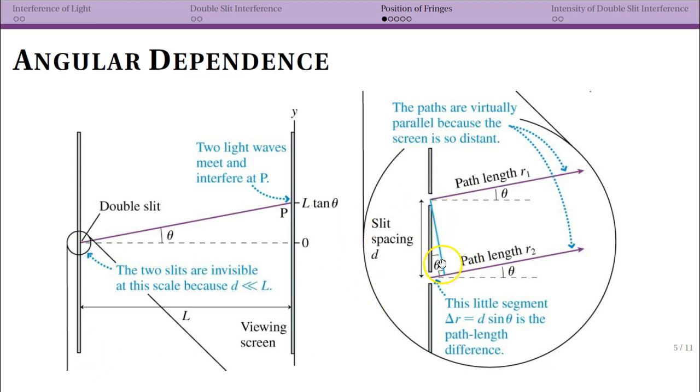This triangle here is going to share the same angle there. It's just a little bit of geometry that I'm not going to quite do out here, but whatever theta we have out here is going to then match this angle here. What's important to recognize is that path length segment is going to be given by d sine theta, where d is that slit spacing.